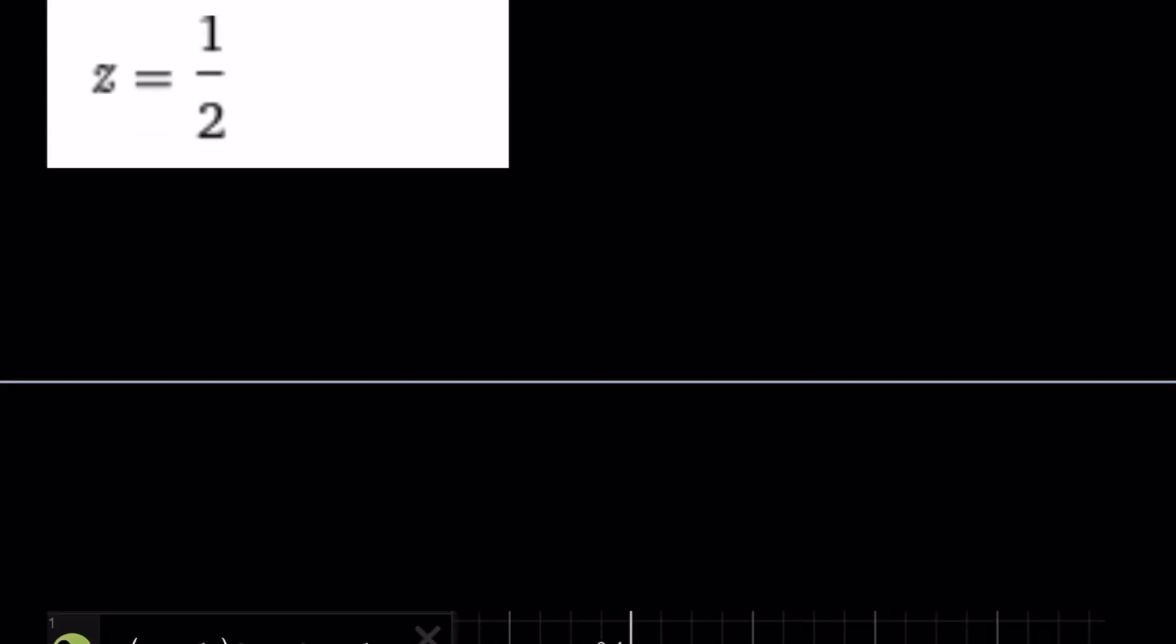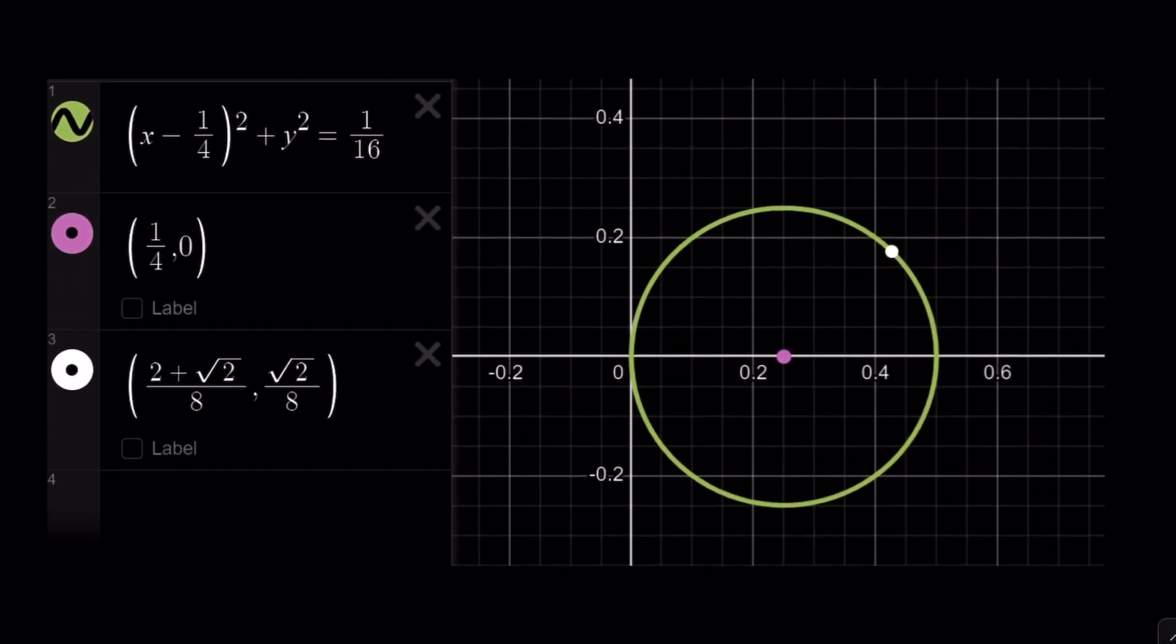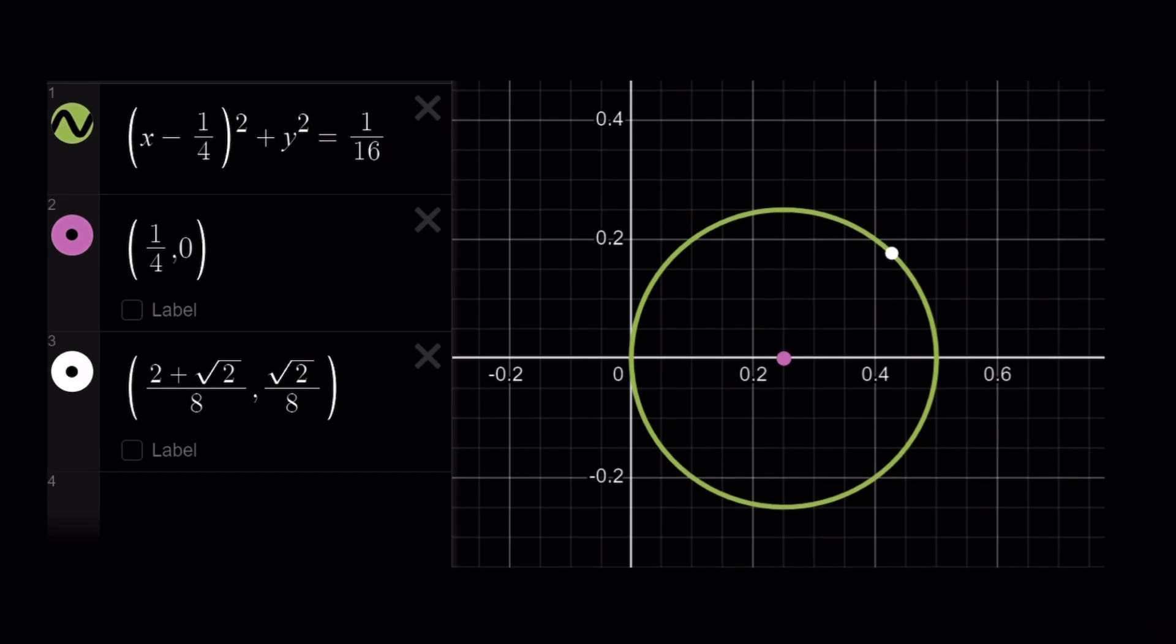Maybe my prompt was misleading, whatever, doesn't matter. Who cares? So here's our circle. As you can see, that's the center. And that's one of the points that I marked for you. Where did I get that from? 2 plus root 2 over 8. Well, I just replace x and y with something.